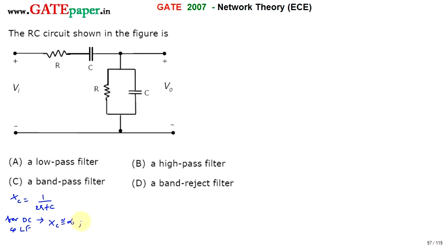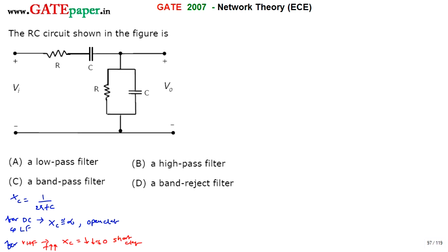So at low frequencies and DC, the capacitor acts as an open circuit. For very high frequencies, where f is very large, XC is very very small and approximates to zero, so the capacitor acts as a short circuit. In between these low and high frequency extremes, the capacitor exists and its effect is present on the circuit.